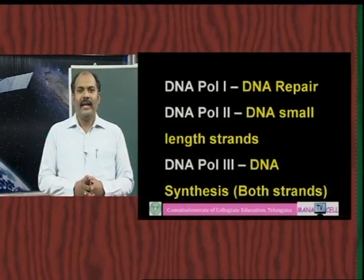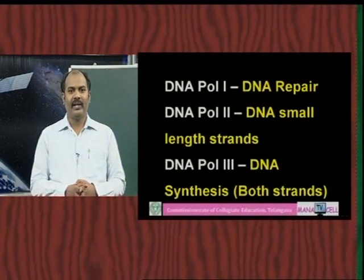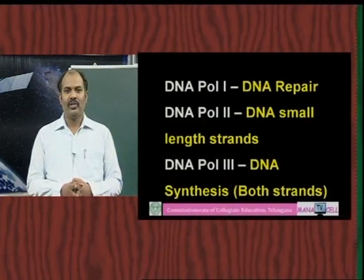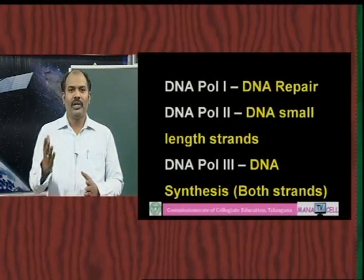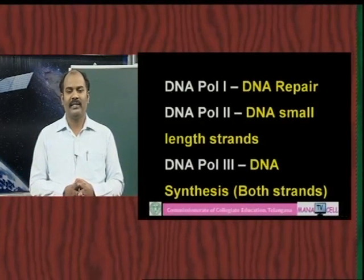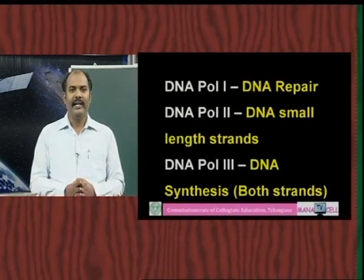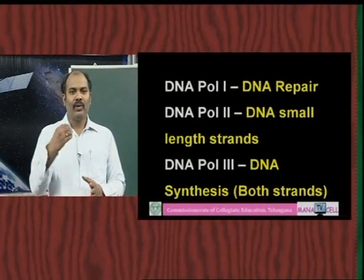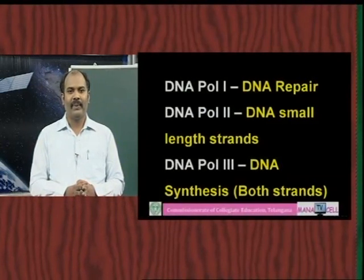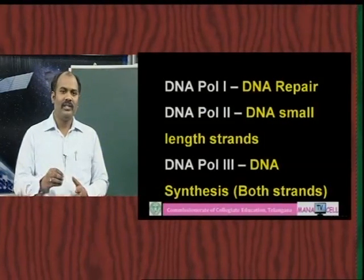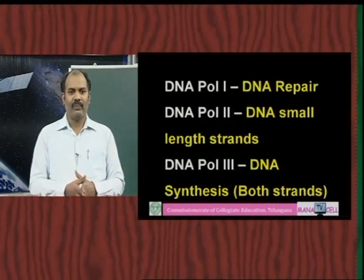DNA polymerase 1 is involved in DNA repair mechanisms. DNA polymerase 2 is involved in small strand synthesis of up to 20 to 40 nucleotides. DNA polymerase 3 is the main enzyme, involved in both strand synthesis — both new strands are synthesized by DNA polymerase 3. All three enzymes require special requirements.